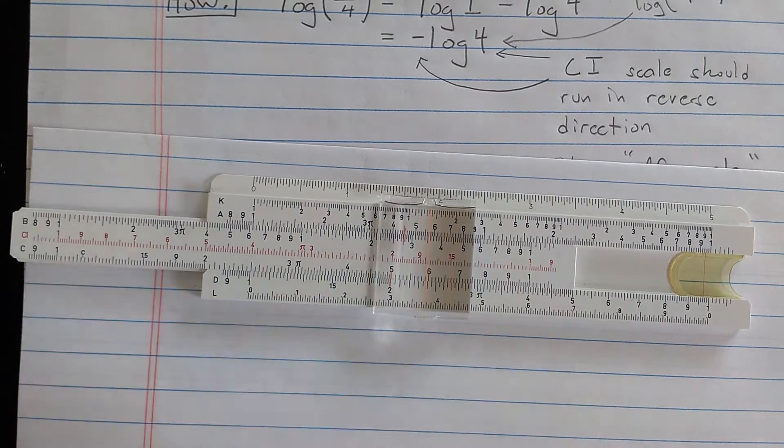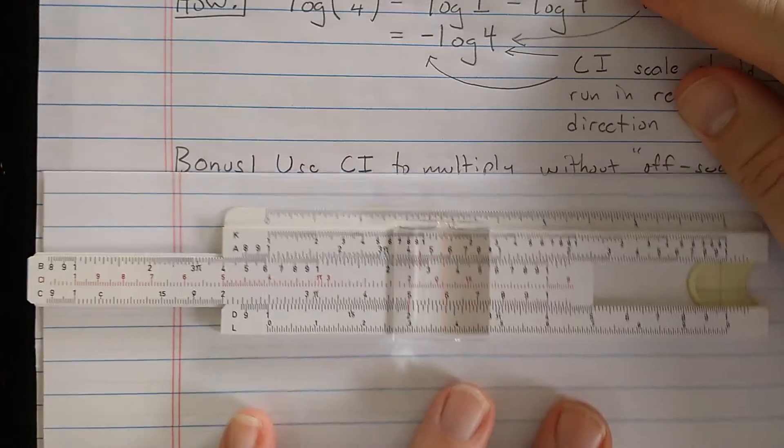The problem is that that was a lot of work and you don't want to reset the slide if you don't have to when you realize that you use the wrong index and you should have used the other one to avoid going off scale.